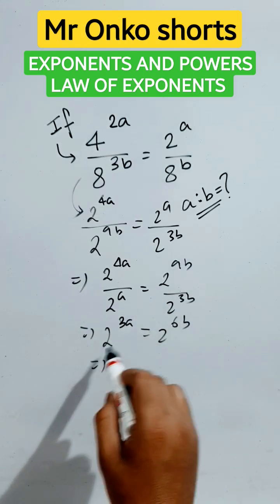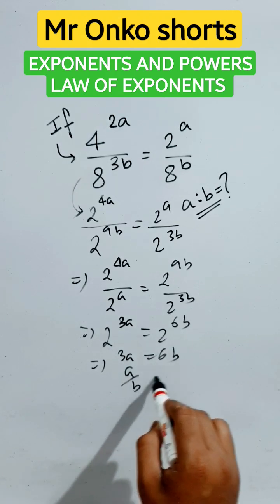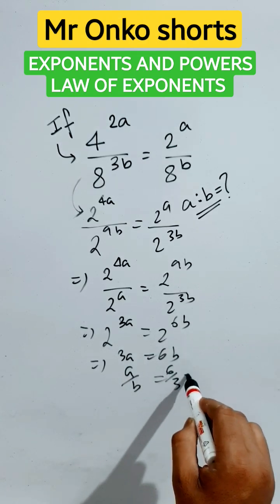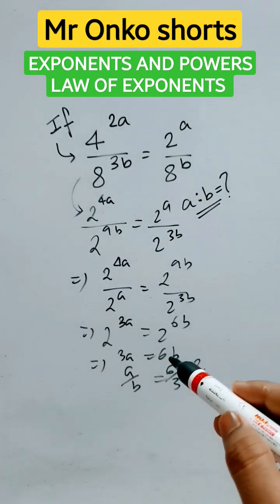The bases are equal, so the exponents must be equal. So, 3a equals 6b. Therefore, a by b equals 6 by 3, that is 2 by 1. So 2 to 1 is the answer to the given question. Subscribe to this channel and share with your math level.